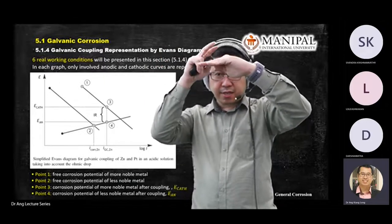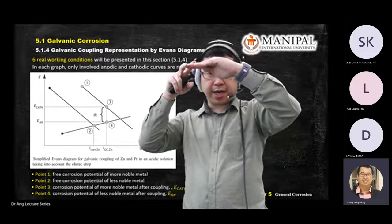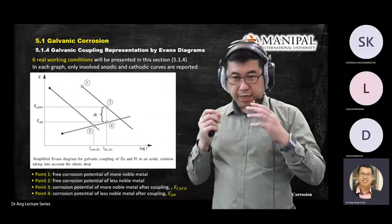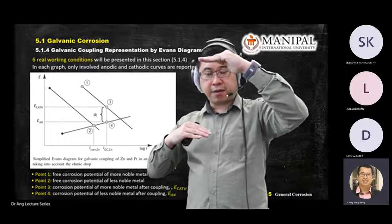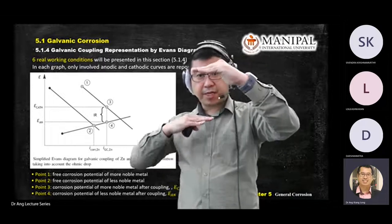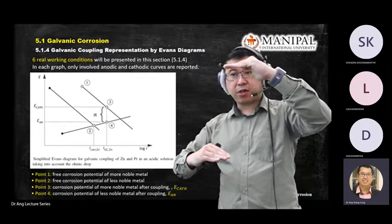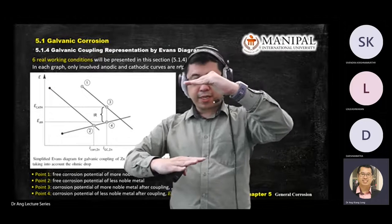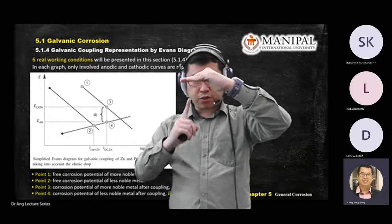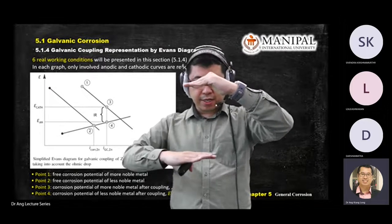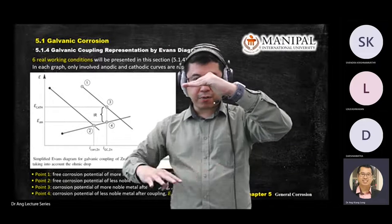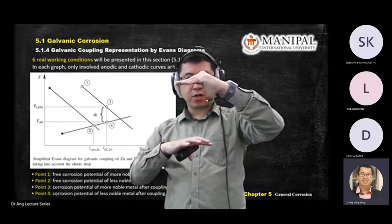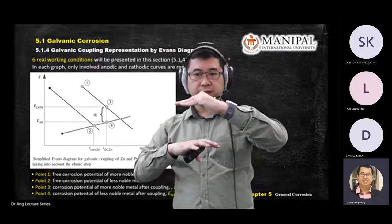The electrons go to the borders of the higher nobility metals and attract the positive charge in the solution to the borders to combine, and the reaction happens there. The lower nobility metal — the one that contributes electrons — is the anode, so the anodic process happens there, and this controls the corrosion rate.